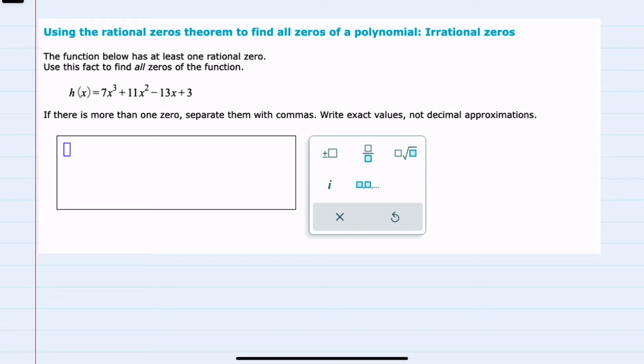Here I'm given the polynomial h of x and I'm told that there is at least one rational zero. From the rational zeros theorem I know that the possible zeros will be in the form of p over q.